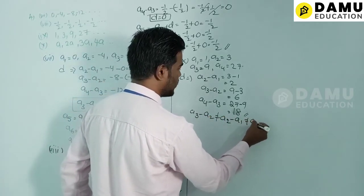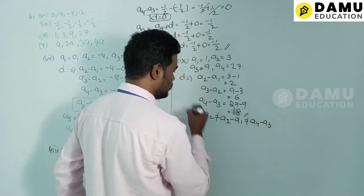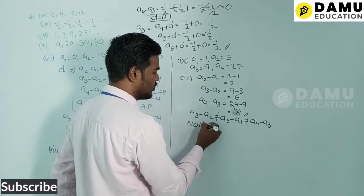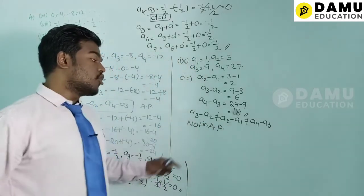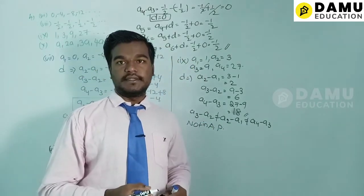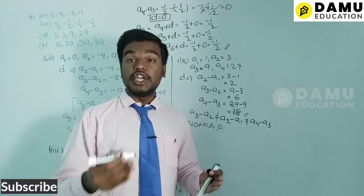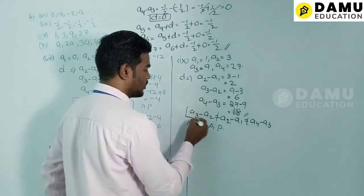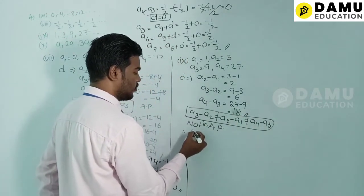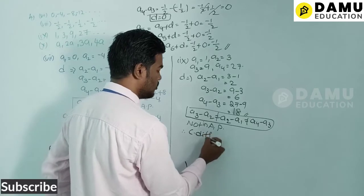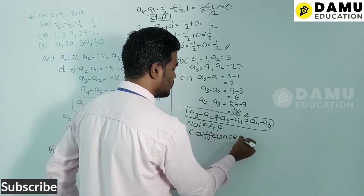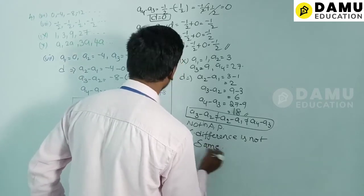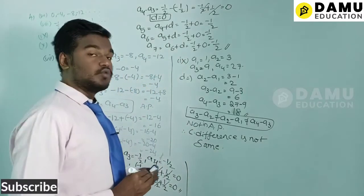Since a3 − a2 ≠ a2 − a1 ≠ a4 − a3, the common difference is not the same. Therefore the ninth series is not in arithmetic progression and we cannot write three more terms.